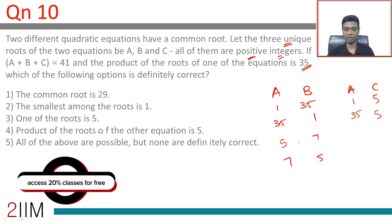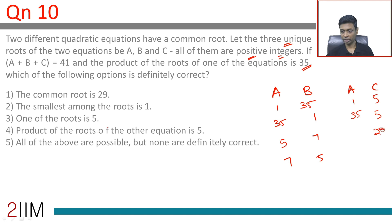Should be 5. 5 plus 7 is 12. Overall they add up to 41, so should be 29. 5 and 29, 7 and 29.